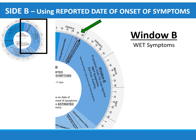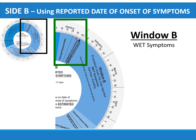The generally accepted time between dry symptom onset and wet symptoms, like diarrhea and vomiting, in EVD is at least 4 days. Therefore, when wet symptoms are indicated on the reported date of symptom onset, the wheel subtracts a default value of 4 days to obtain the estimated start of dry symptoms. To use the wheel in Window B, place the black arrow on the reported date of onset of wet symptoms. In this presentation, the black arrow is on January 30th, indicating dry symptoms started January 26th. The exposure window is estimated as January 9th to January 22nd.